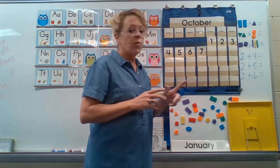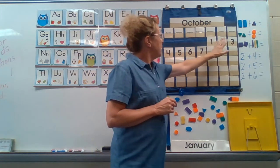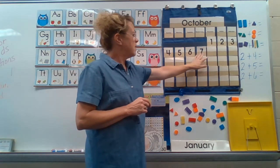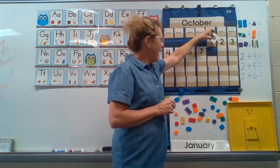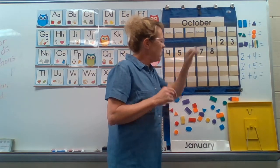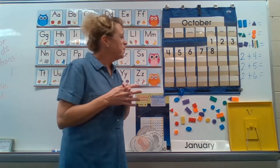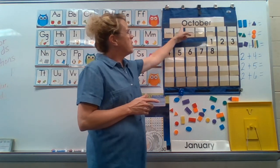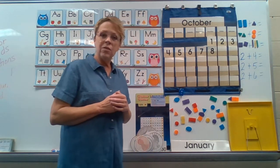Now, let's count over and see what date it is, what number we're going to see. One, two, three, four, five, six, seven, eight. So, let's say the date together today. Today is Thursday, October 8th, 2020. Good job.